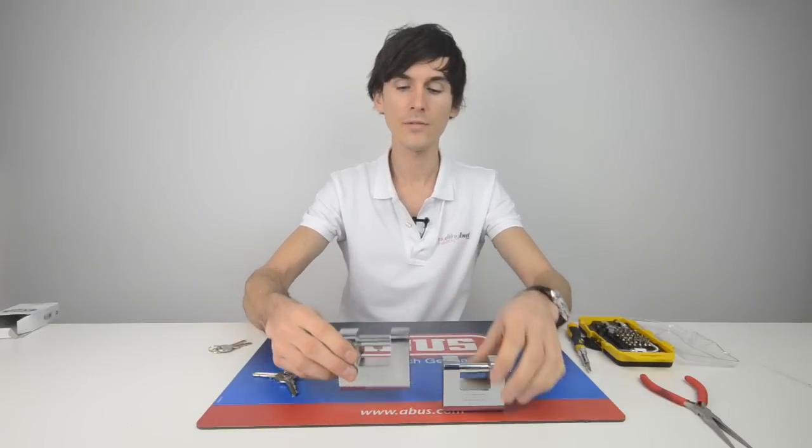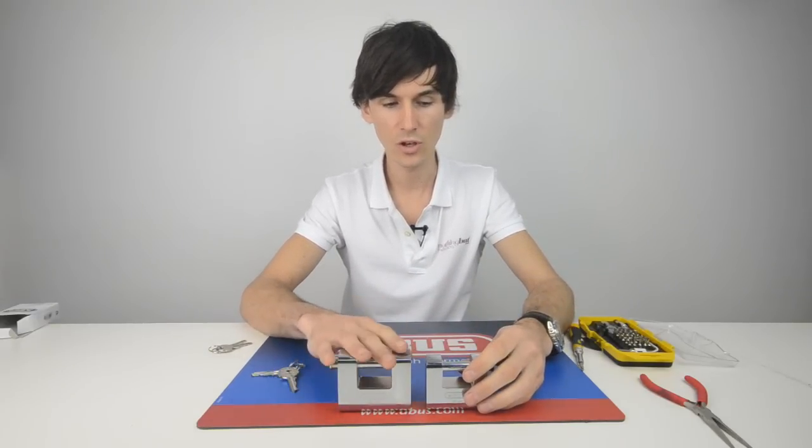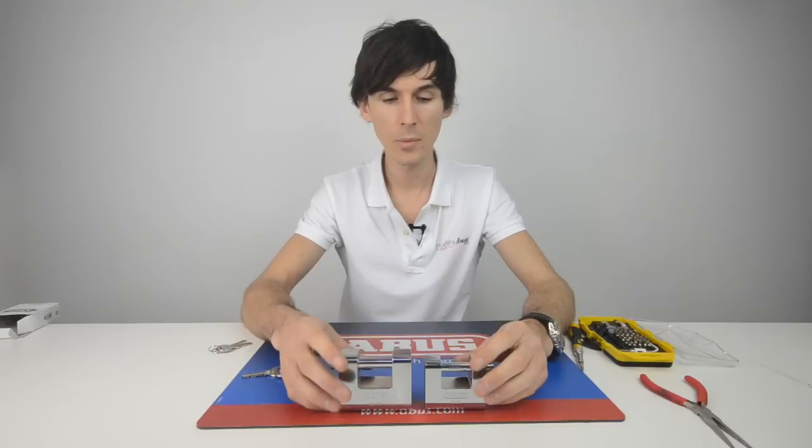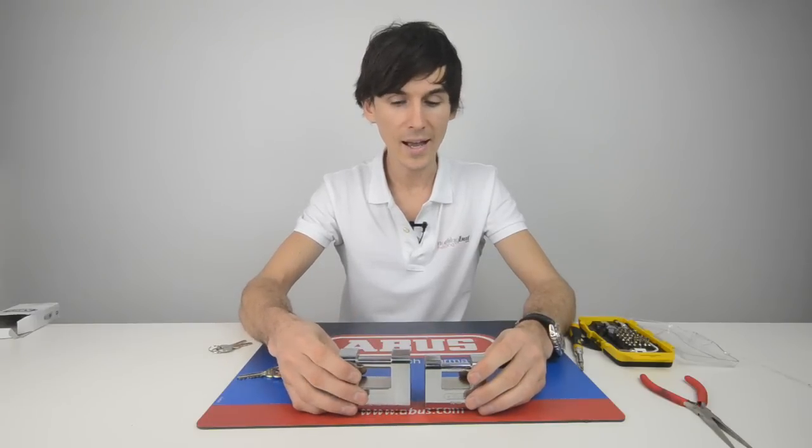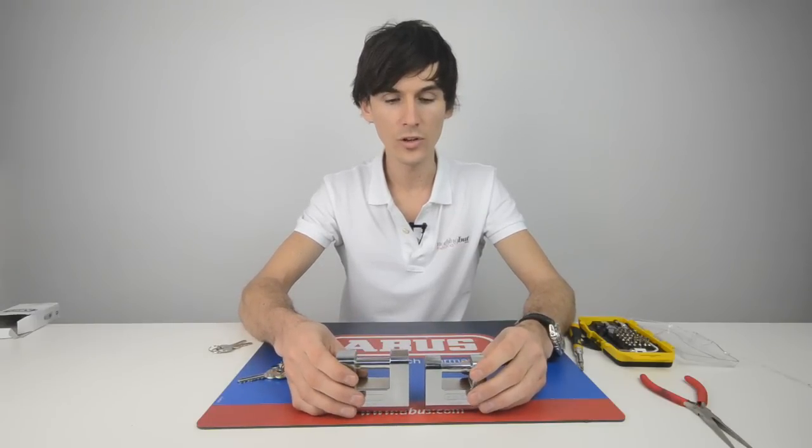So there we have it. That's the 92 series, a very secure padlock, and often called the shutter padlock because they fit snugly on the bottom of roller shutter doors. But really, this padlock can be used as any other closed shackle padlock would for a medium to high security model.